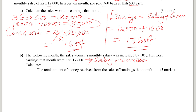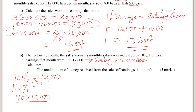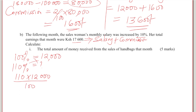For the salary, there is an increase of 10%, so I'll start by getting the new salary since we have the original salary. After an increase of 10%, that would be 100 plus 10, which is 110%. So the new salary will be 110 multiplied by $12,000 divided by 100, and this gives the new salary as $13,200. You can see it has gone from $12,000 to $13,200 after the increase of 10%.